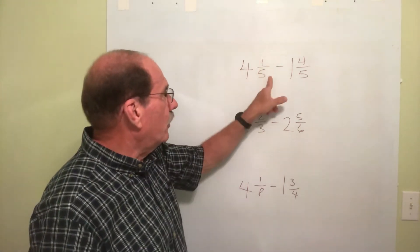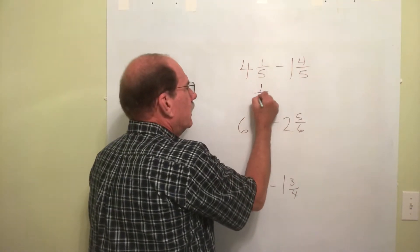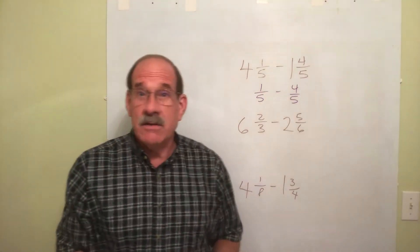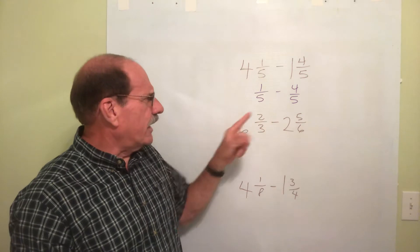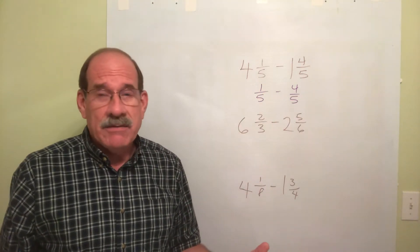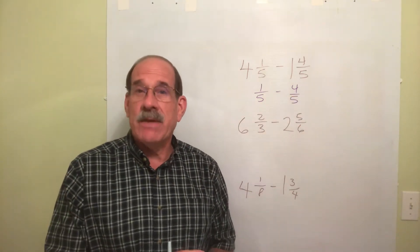So all we're doing is one-fifth minus four-fifths. Well, uh-oh. One-fifth minus four-fifths. That isn't going to work because that means I got to do one minus four. One minus four is a negative number because that's bigger. I can't do that. Well, I can, but here's how we have to get around this.